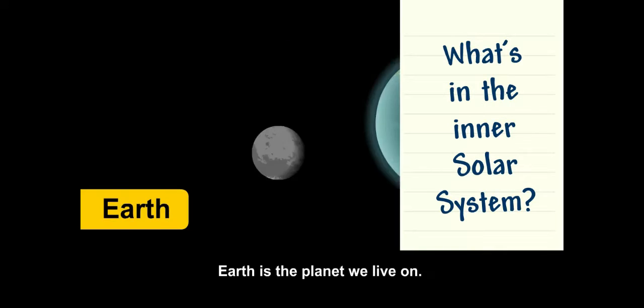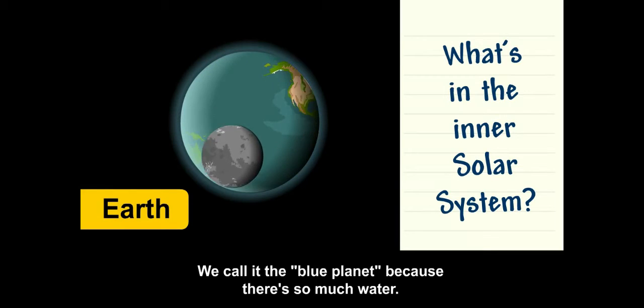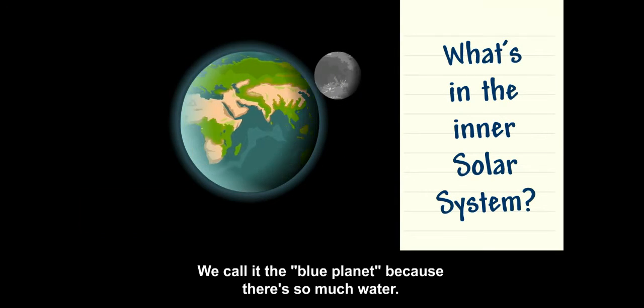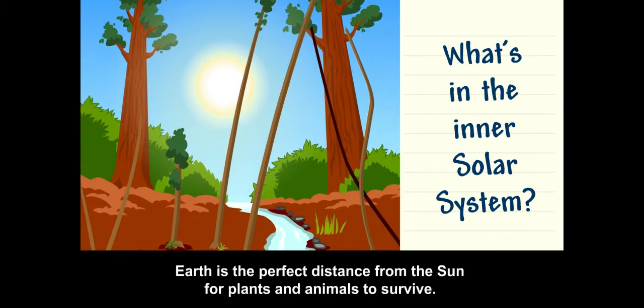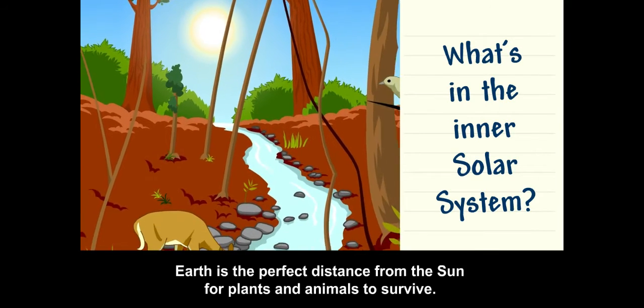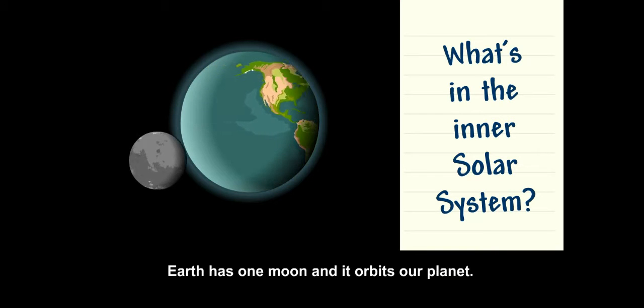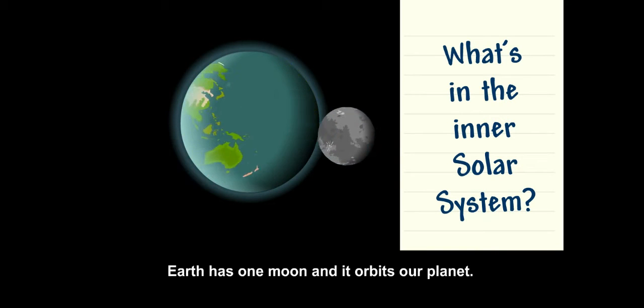Earth is the planet we live on. We call it the blue planet because there's so much water. Earth is the perfect distance from the sun for plants and animals to survive. Earth has one moon, and it orbits our planet.